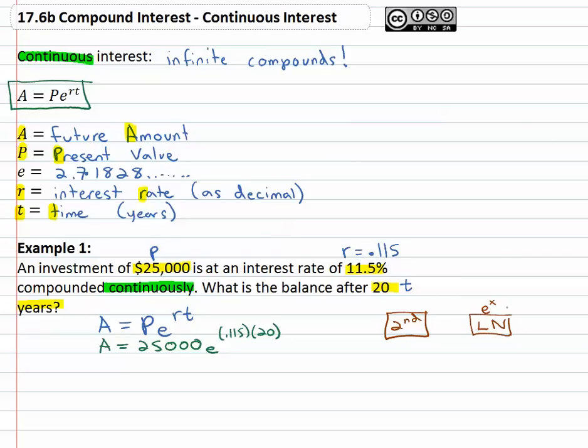That's the button that you're going to go after because when you hit second it gives you the little writing above the button. And notice it even gives you an exponent, it opens up a parenthesis for you to type point one one five times twenty, close the parenthesis. Very important that the whole exponent is in parenthesis.